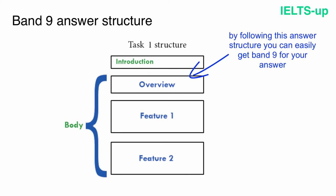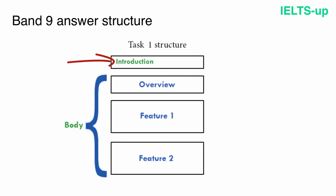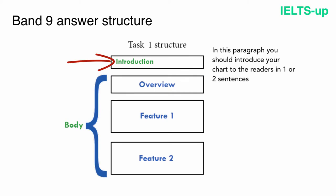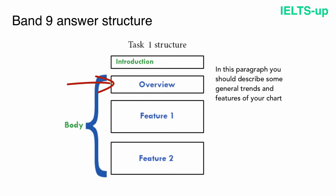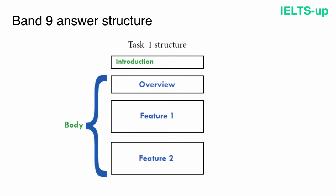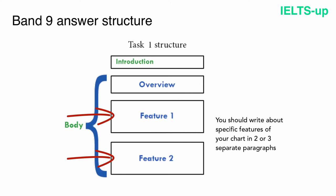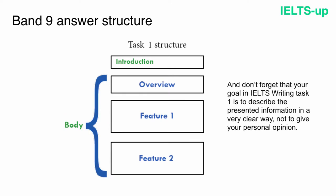By following this answer structure you can easily get band 9. Your first paragraph is an introduction where you introduce your chart in one or two sentences. Then you write an overview paragraph describing general trends. Next, you write about specific features in two or three separate paragraphs. Your goal in IELTS writing task 1 is to describe the presented information clearly, not to give your personal opinion. So don't write a conclusion in task 1.